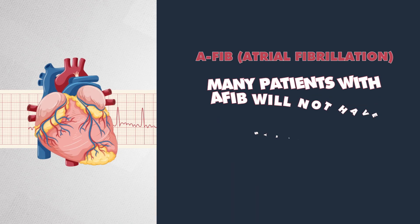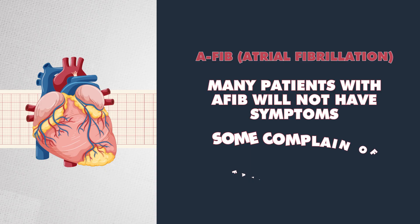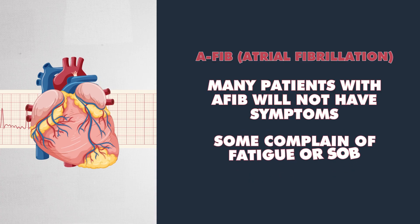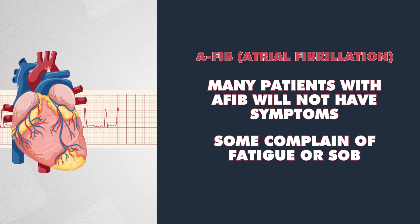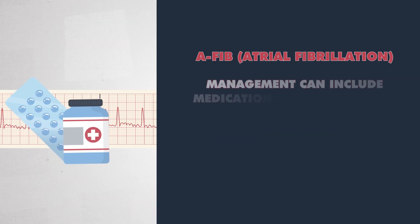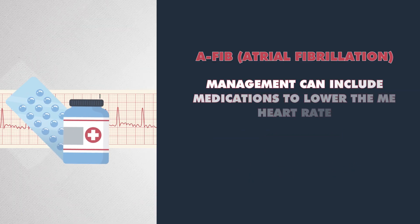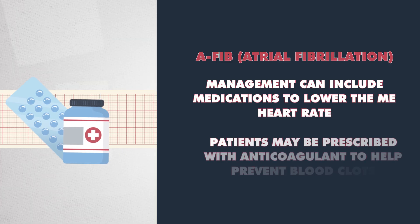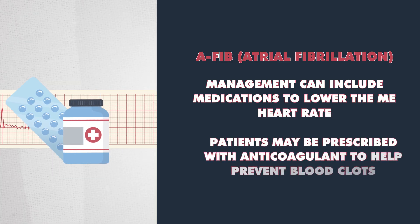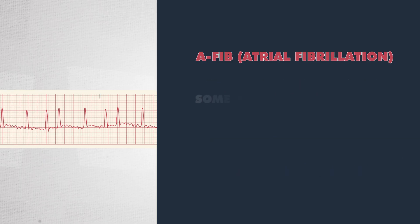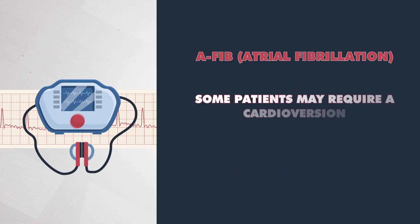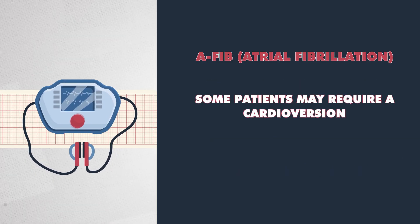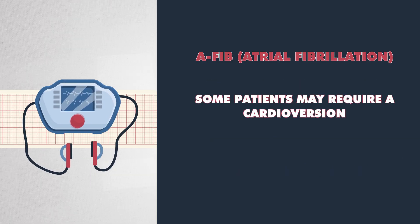Many patients with AFib will not have symptoms. However, some complain of fatigue or shortness of breath. Treatment can include medications to lower the heart rate, and patients may be prescribed an anticoagulant to help prevent blood clots, as the rhythm increases the patient's risk of developing one. Some patients may require cardioversion, which is a shock to the heart in an attempt to return it to a normal rhythm.